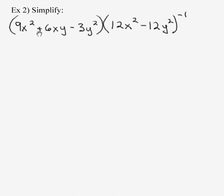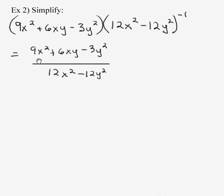Here we have a polynomial, 9x squared plus 6xy minus 3y squared, times 12x squared minus 12y squared to the quantity, the negative 1 power. That's just another way of writing this, the quotient of two polynomials.